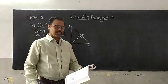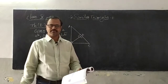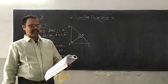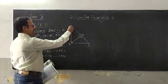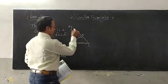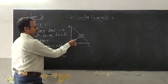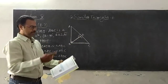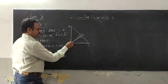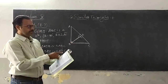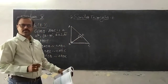Now let us see the next theorem. See page number 215, theorem 8.7. If a perpendicular is drawn from the vertex of the right angle of a right triangle — I have taken a right angled triangle ABC — we have drawn the perpendicular BD from the vertex of the right angle, that is B, to the hypotenuse.